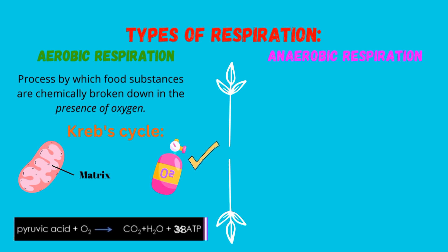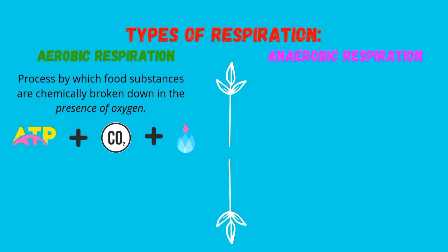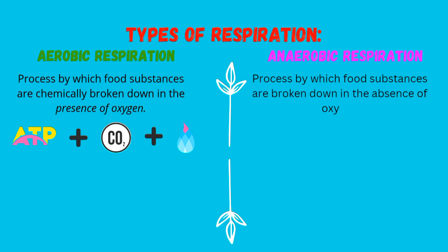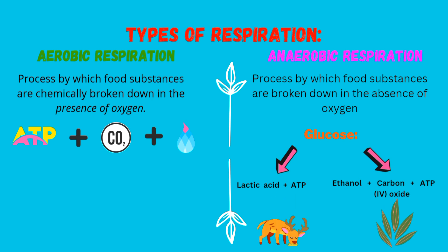Specifically, 38 molecules of ATP are produced, so quite a lot of energy is released in the Krebs cycle. Now let's move on to the second type: anaerobic respiration. This is the process by which food substances are chemically broken down in the absence of oxygen. The products differ in plants and animals, but in both cases, energy in the form of ATP is produced.